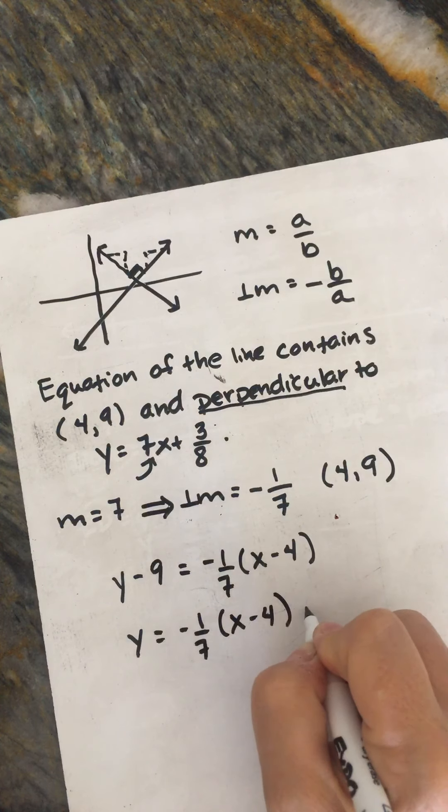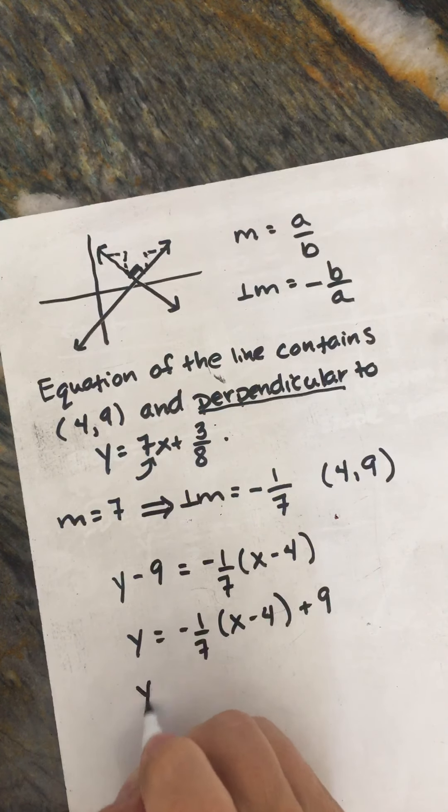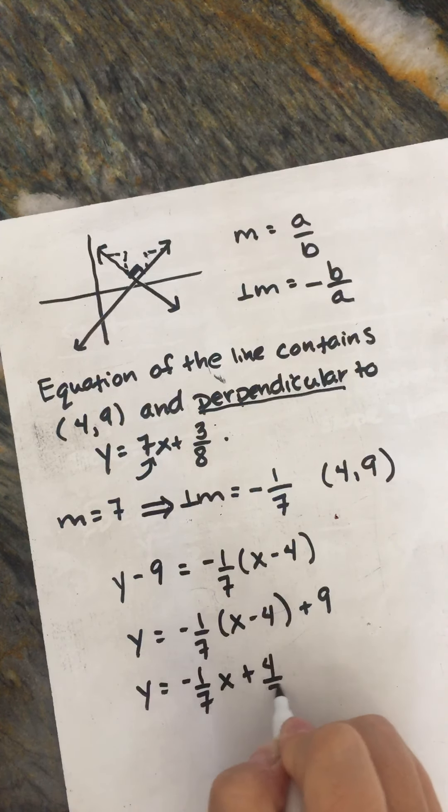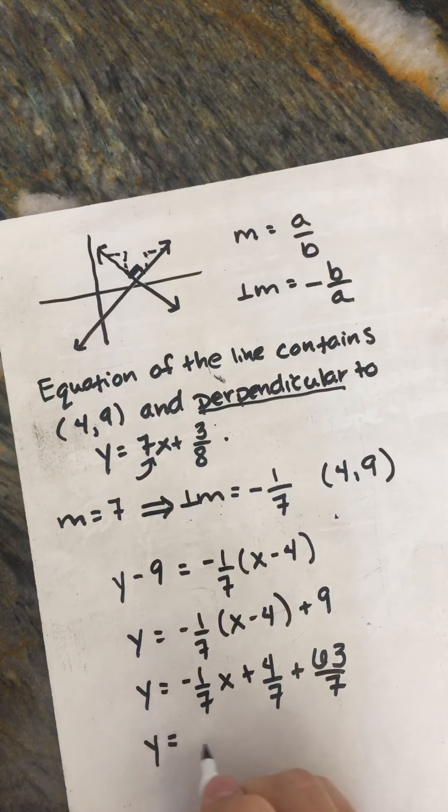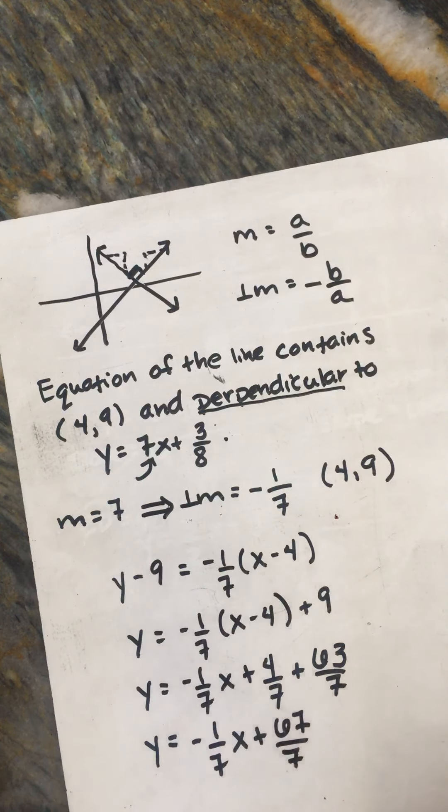And so we've got that. And then distribute our -1/7 plus 4/7. And I'm going to turn this into 7ths, so 63/7. So I can combine my like terms here. So y = -1/7x + 67/7. I don't think that reduces at all.